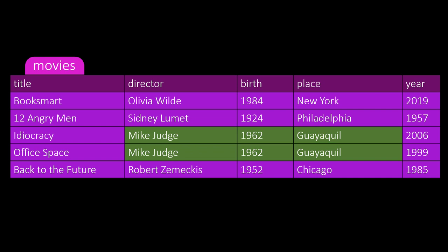Mike Judge's year and place of birth do not change with every movie he has made. Repeating this data introduces a few problems. First, we have to enter the right year and place of birth every time we add a new movie by Mike Judge. Second, if we realize later that we got the year wrong, we have to change it multiple times.